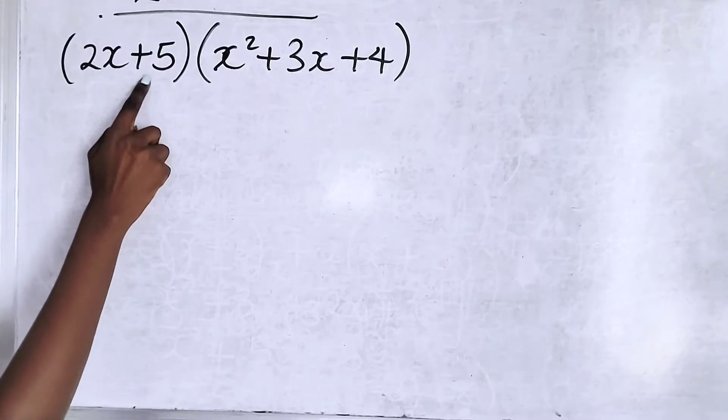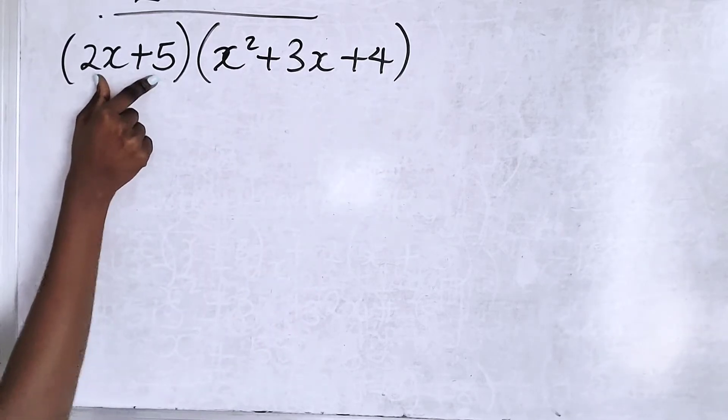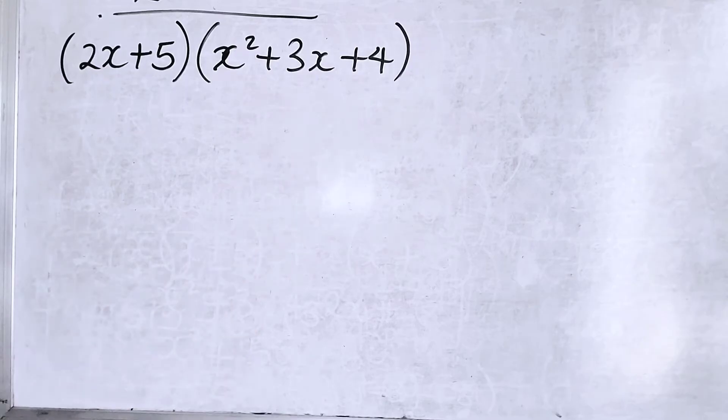This is called a binomial. This is called a trinomial because you have two terms. You have three terms. Take note of that, okay?